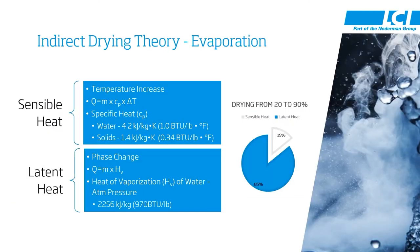Now that we understand the theory on heat transfer and how to calculate how much heat is required, let's talk about how that heat translates into evaporation. To evaporate the water, we need to use two types of heat: sensible heat and latent heat. Sensible heat is temperature increase, and it's very simple to understand. You go out in the morning and it's 50 degrees Fahrenheit, or in the afternoon and it's 85 degrees Fahrenheit — you can sense that temperature increase, and it's sensible.